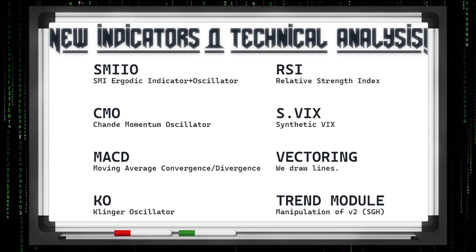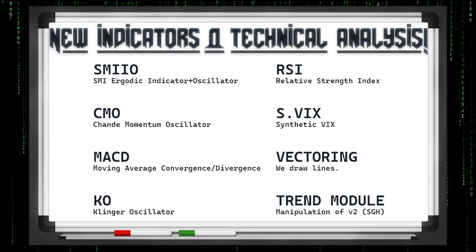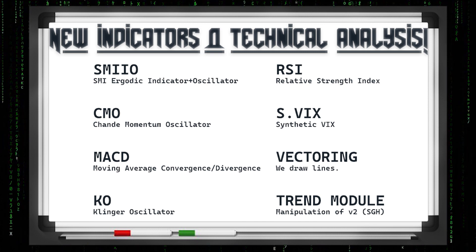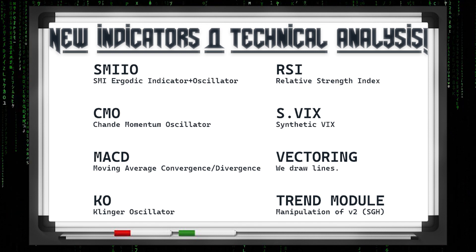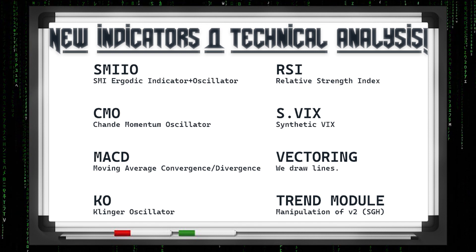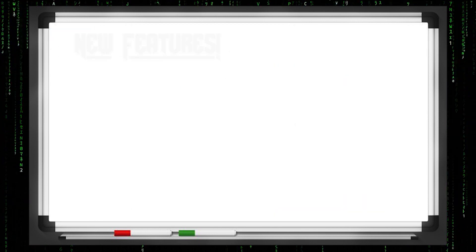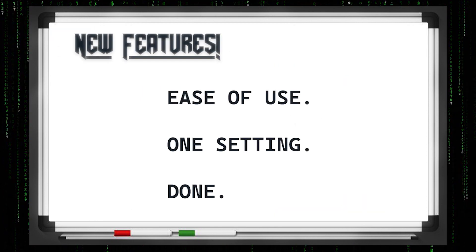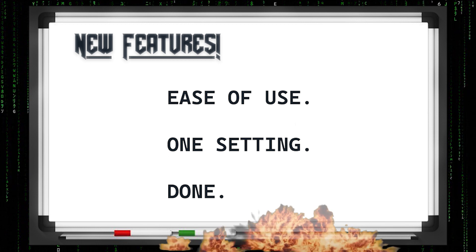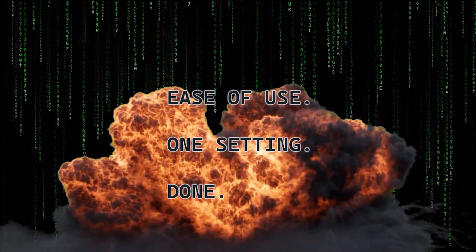Here's a look at our new indicators and tools we use for technical analysis. Each one of these is multifaceted and we do different things with each of them — they don't serve a singular purpose. We also manipulate the second version of the trend module quite beautifully. And then there's the new features: the number one we've been talking about for months is ease of use — the one setting and done.